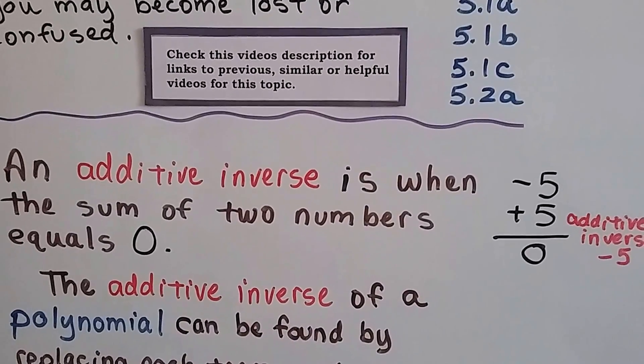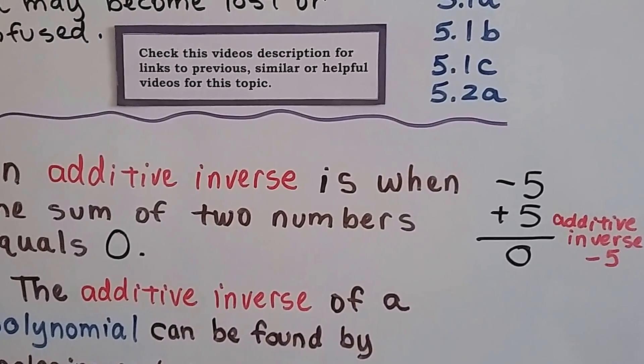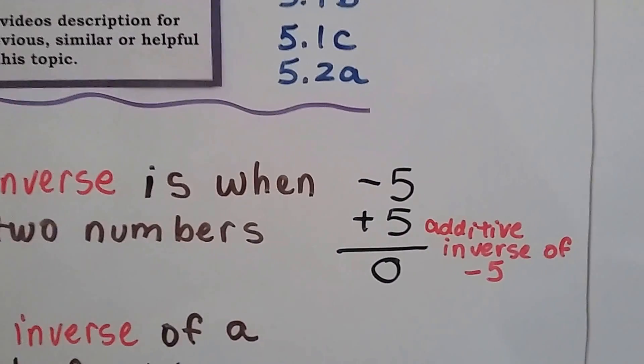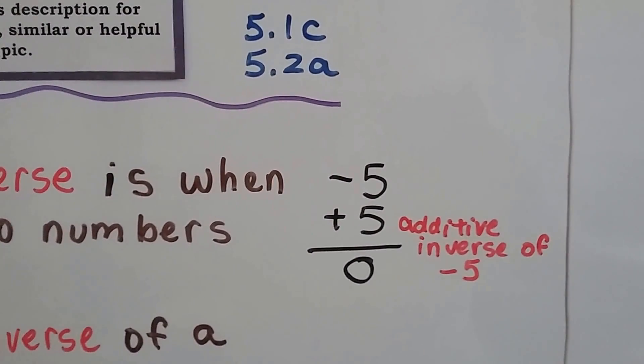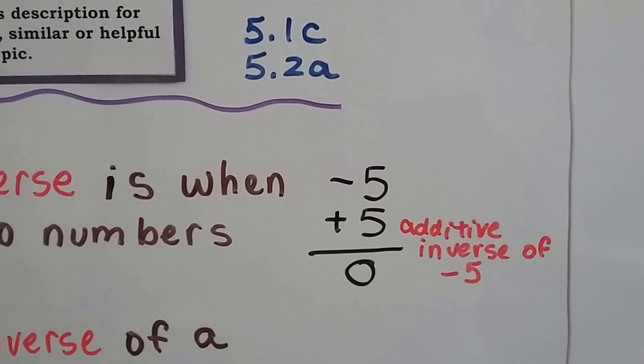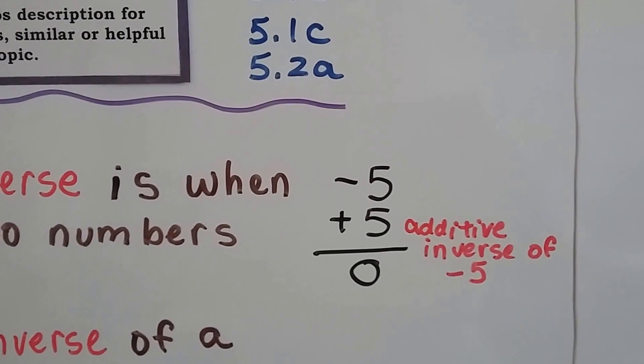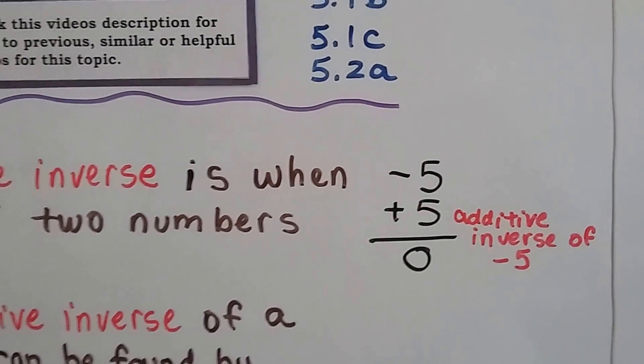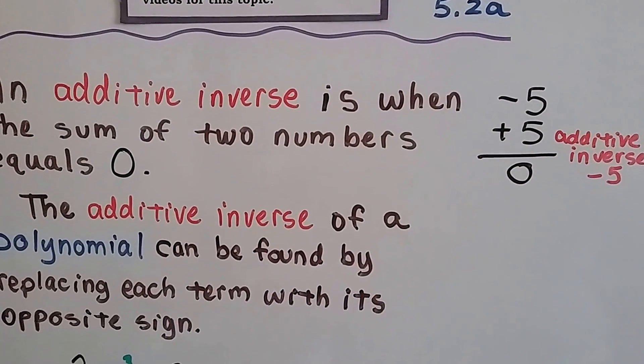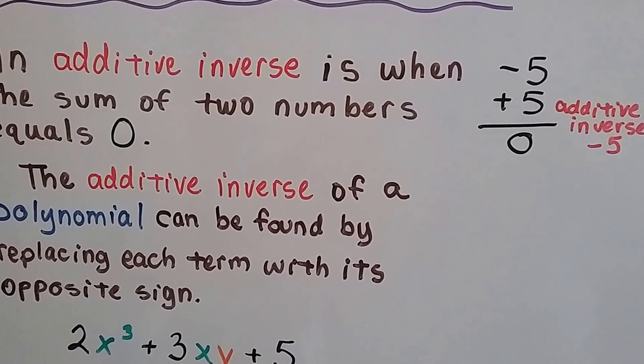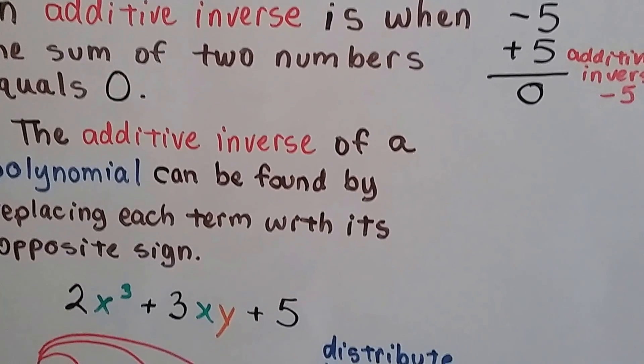An additive inverse is when the sum of two numbers equals zero. If you have a negative 5 and you add 5, it's going to make zero. That positive 5 is the additive inverse of that negative 5. It helps it to become zero. The additive inverse of a polynomial can be found by replacing each term with its opposite sign.